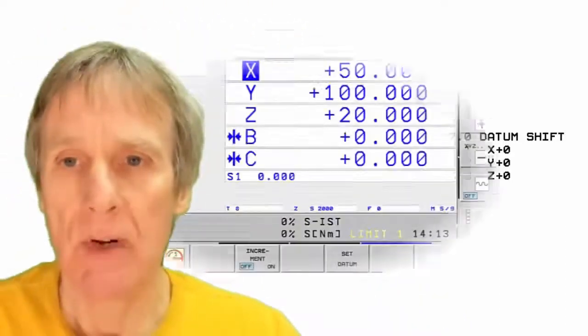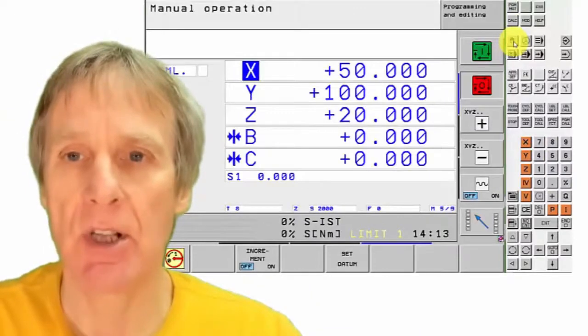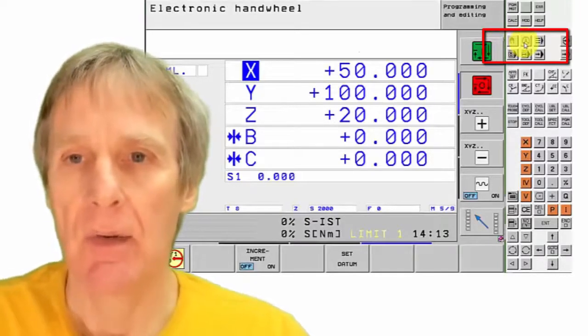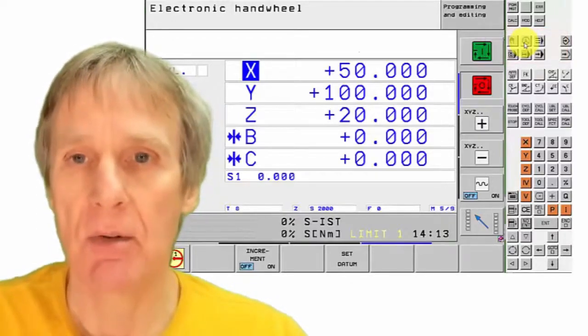We need to get our tool or probe or whatever it is we're going to use to set this datum to a position, so we move that to its position using the hand wheel. This could be one of these touch probes that's just a manual probe that you touch on the end of a job, you could use a wobbler, you can use the edge of a tool.